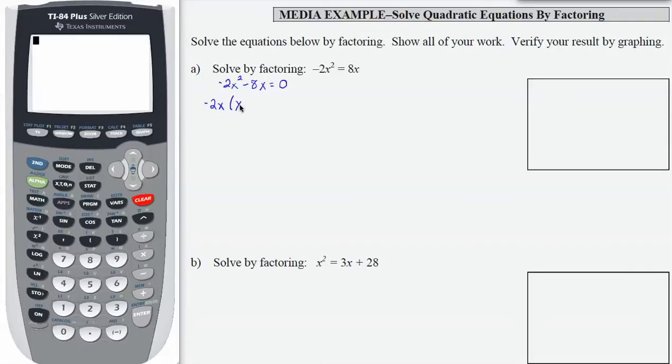And you can always check by multiplying negative 2x times x gives you negative 2x squared. If I remove negative 2x from negative 8x, I have left a positive 4. And again, you can check negative 2x times a positive 4 is negative 8x. So be careful with your signs on these. I must include the equal 0 part.